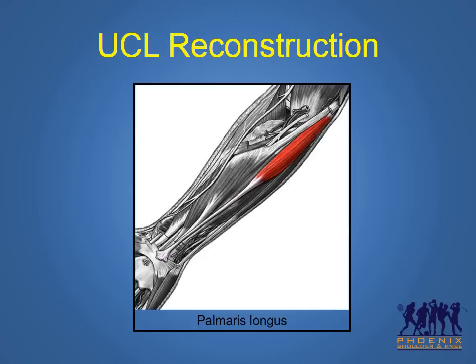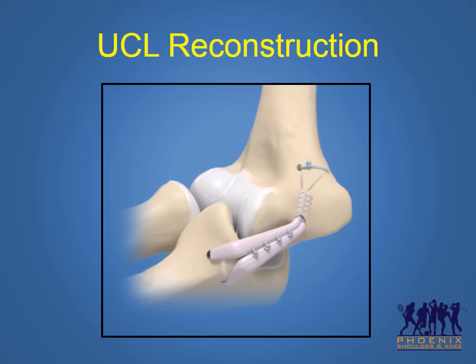This slide shows a diagram of the palmaris longus muscle and tendon. The muscle is of minimal functional importance, so the tendon, outlined in the yellow box, can be taken as a graft to reconstruct the ulnar collateral ligament. In order to perform the ulnar collateral ligament reconstruction surgery, also known as Tommy John surgery, the graft is passed through tunnels created in the bones on the ends of the humerus and ulna in an effort to reconstruct the anatomic orientation of the anterior bundle of the ulnar collateral ligament.